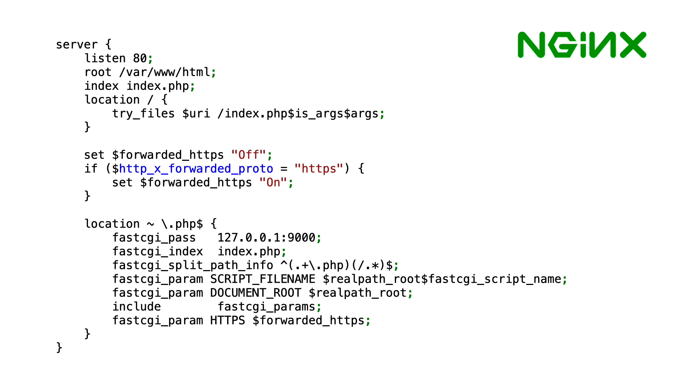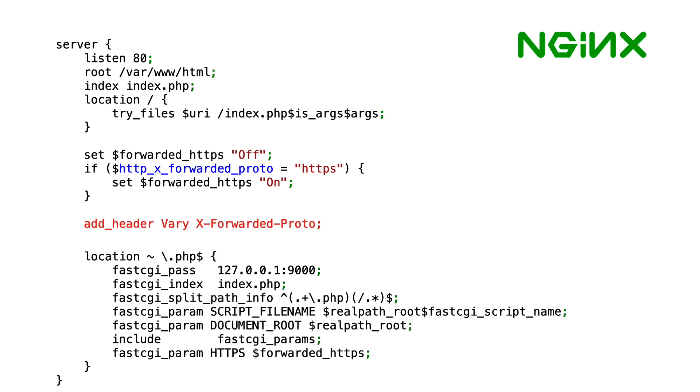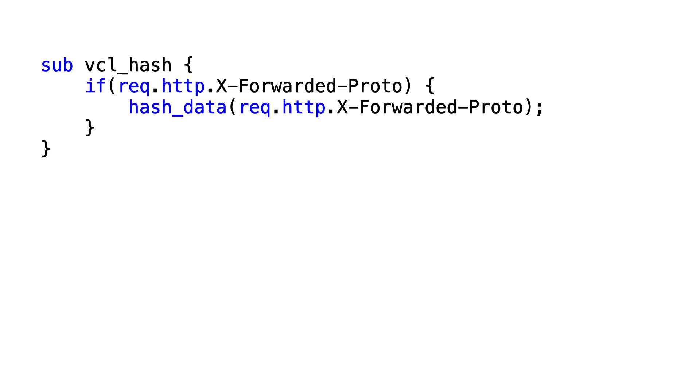Varnish will respect that and will use it to create cache variations. If you're using Nginx instead of Apache, the solution is similar — we use the add_header syntax to add the Vary header and ensure that its value is X-Forwarded-Proto. Same deal, same result: Varnish will receive the response and will create the appropriate cache variations. A third option would be doing it in VCL itself without the need of modifying any web server configuration. What we're doing here is: if the X-Forwarded-Proto header is set, we'll attach it to the hash, ensuring that there's scheme awareness in the lookup — meaning Varnish will have an HTTPS version of the object and an HTTP version — and that eliminates that infinite redirect loop.